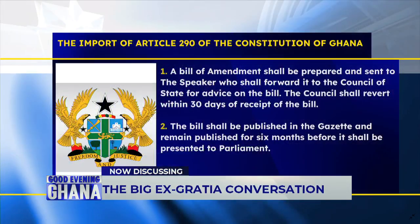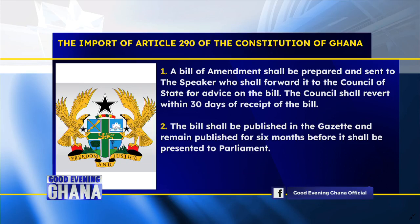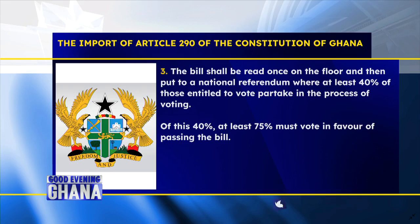A bill of amendment shall be prepared and sent to the Speaker, who shall forward it to the Council of State for advice on the bill. The Council of State shall revert within 30 days of receipt of the bill. The bill shall be published in the Gazette and remain published for six months before it shall be presented to Parliament. The bill shall be read once on the floor and then put to a national referendum where at least 40% of those entitled to vote partake. Of this 40%, at least 75% must vote in favor of passing the bill.